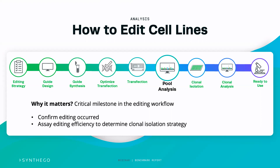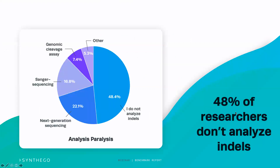Alarmingly, about 48% of people are not using any methodology to analyze how their experiment has worked. This is concerning because this is a very important junction at which you have to make key decisions — do you keep moving with this workflow and invest potentially a month or more isolating single-cell clones, or should you restart, spend another week or two optimizing, and try to get a higher editing efficiency?